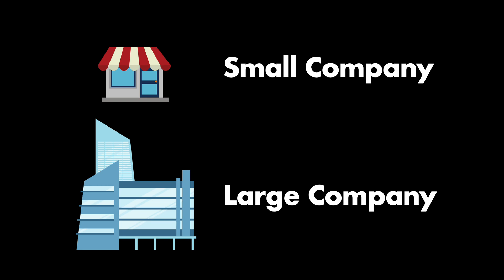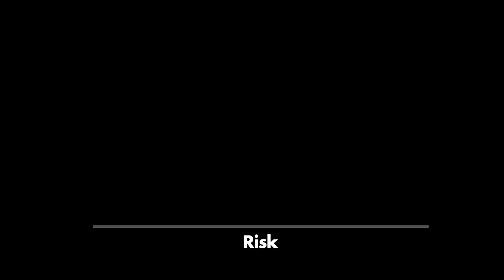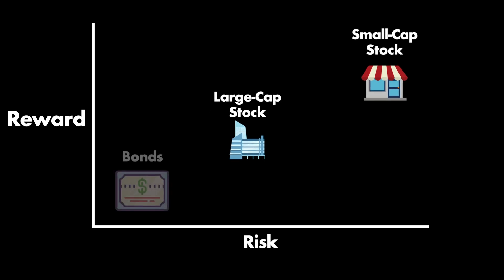For example, they might show that small companies have higher average returns than large companies. So then the next thing you'd want to do is to say, well, can that easily be explained by risk? Might it be the case that small companies are just riskier than big companies and that the extra performance is just a reward for that risk? After all, stocks outperform bonds, but the fact that stocks outperform bonds historically is not generally viewed as some kind of great market inefficiency or opportunity.